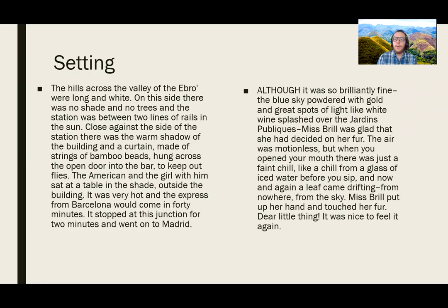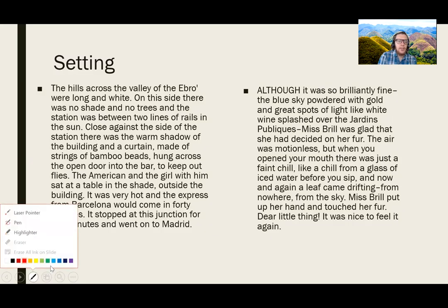Let's compare the way in which both stories open. Hills Like White Elephants: The hills across the valley of the Ebro were long and white. On this side there was no shade and no trees, and the station was between two lines of rails in the sun. Close against the side of the station, there was the warm shadow of the building and a curtain made of strings of bamboo beads hung across the open door into the bar to keep out the blinds. The American and the girl with him sat at the table in the shade outside the building. It was very hot, and the express from Barcelona would come in 40 minutes. It stopped at this junction for two minutes and went on to Madrid.